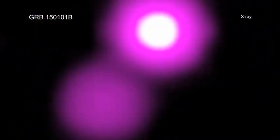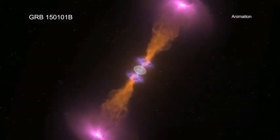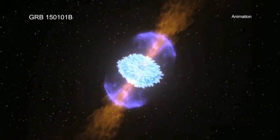The object of the new study, called GRB 150101B, was first reported as a gamma-ray burst detected by Fermi in January 2015.